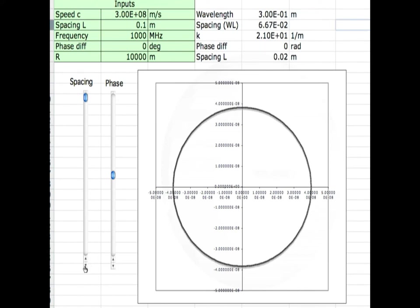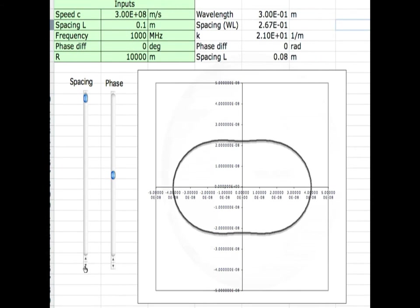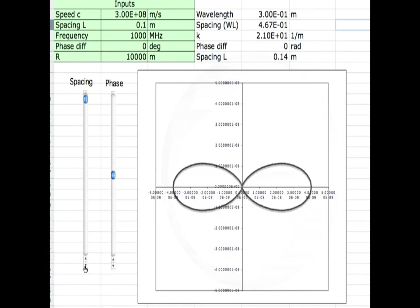And then as you start moving these isotropic radiators apart, keeping everything else the same, the pattern starts to change. And if you notice at about a half wavelength it's got this nice two lobe structure. You've got two beams going in opposite directions, no side lobes.